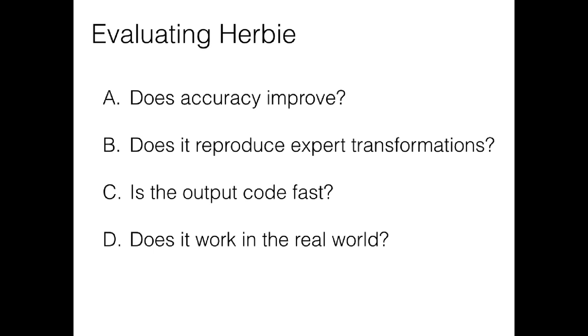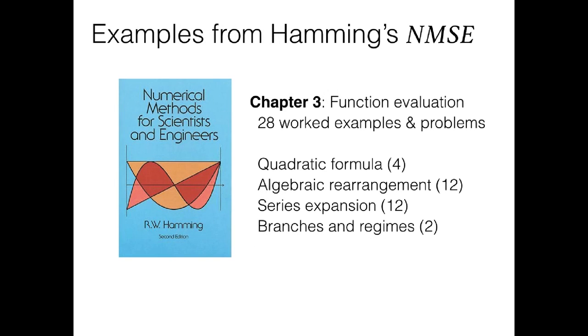So what do we want to justify in these experiments? We want to show that accuracy improves. And it does this by reproducing the same sorts of transformations that experts find. Furthermore, the output that Herbie produces can be a little more complex than the input, so we wanted to make sure that the output code is fast. Finally, I'll relate some anecdotes about using Herbie on real world numeric code bases. But to start, we wanted a benchmark suite of simple but widely applicable numerical methods problems. And we pulled these from a classic numerical methods textbook, Richard Hamming's Numerical Methods for Scientists and Engineers.